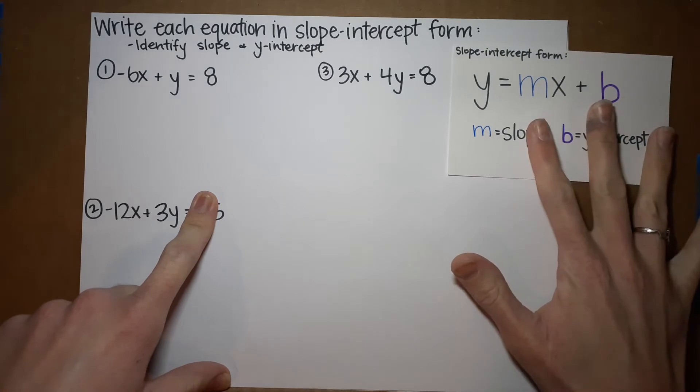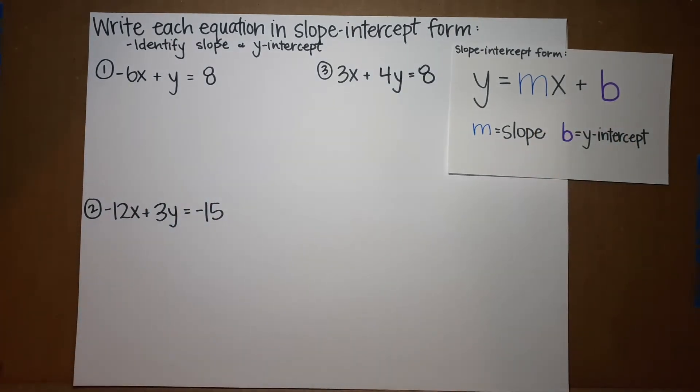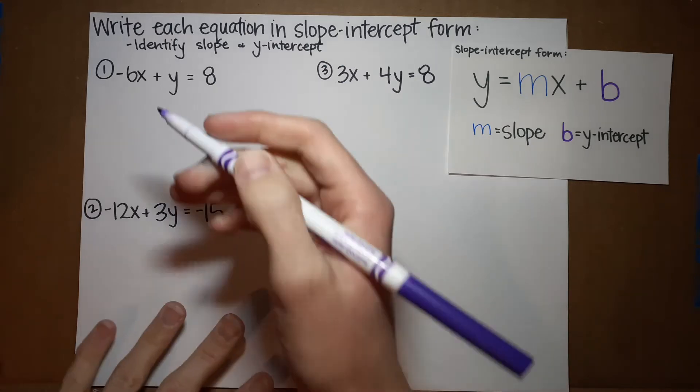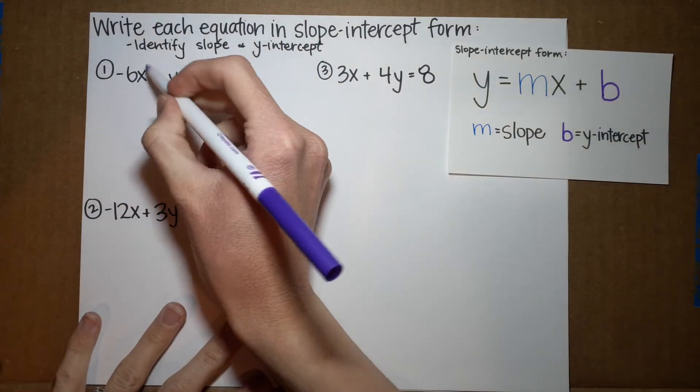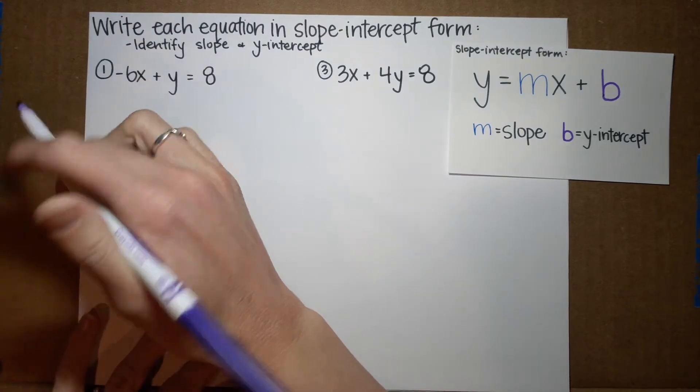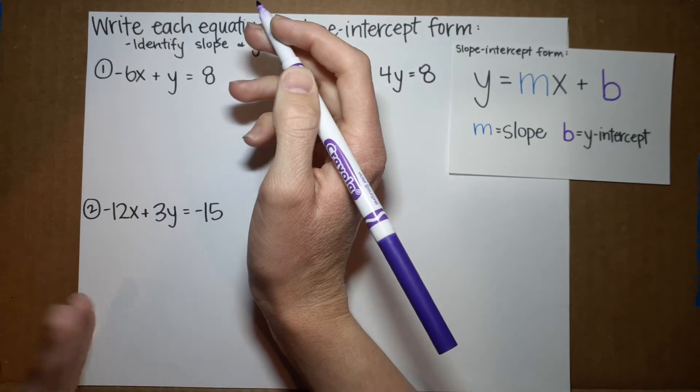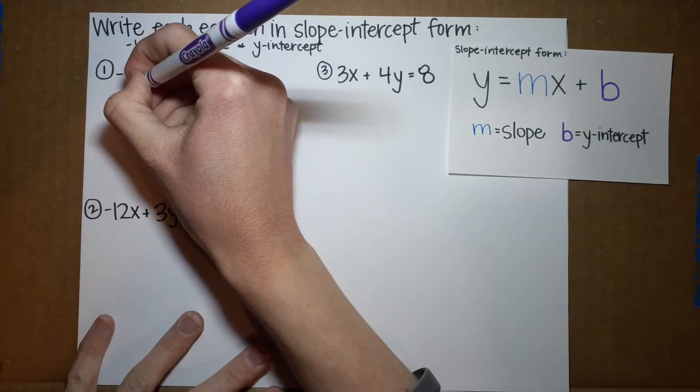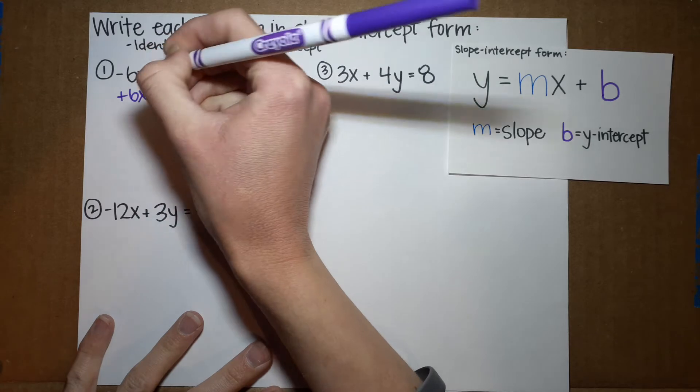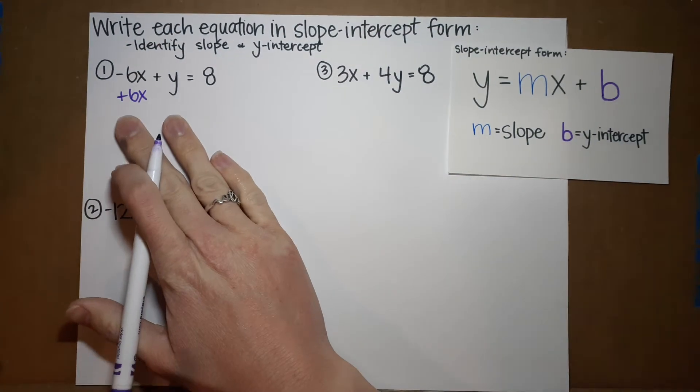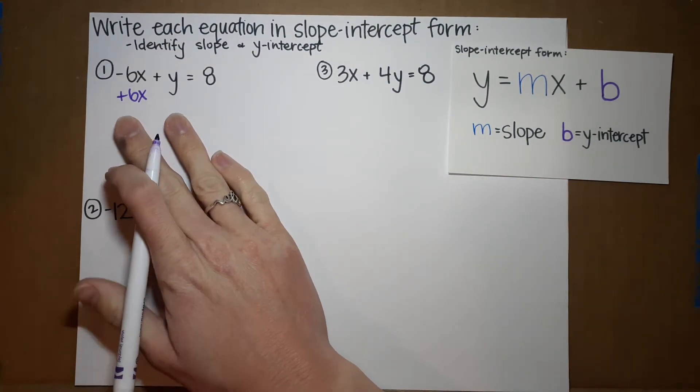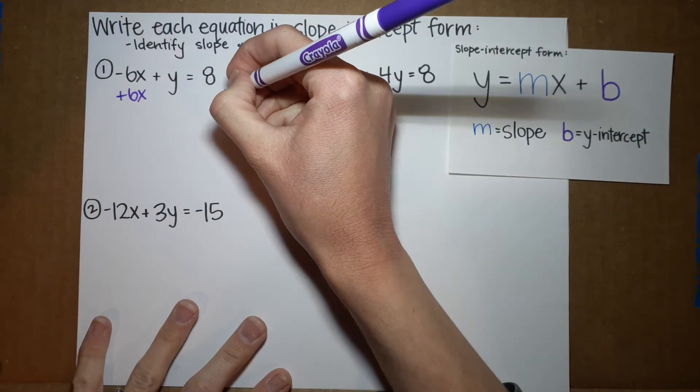So, number one, we've got negative 6x plus y equals 8. Okay, we want to get y all by itself. So, I need to get rid of this negative 6x. To get rid of that, I'm going to do the opposite of subtracting 6x, which is adding 6x. Now, if I do that to one side, I have to do it to the other side. So, I'm also going to add 6x right here.